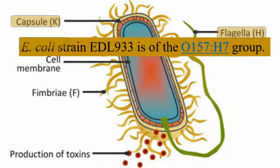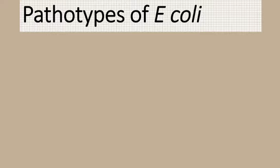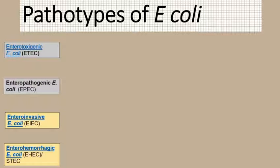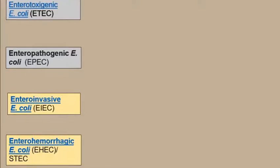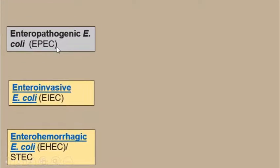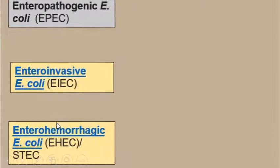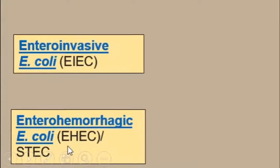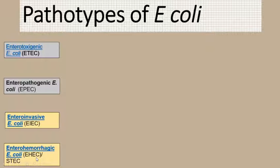Other than the antigens, E. coli can also be classified into different pathotypes depending upon the pathogenicity — how they are causing the lesions. There are nearly six types of pathotypes of E. coli. The major four are enterotoxigenic E. coli (ETEC), enteropathogenic E. coli (EPEC), enteroinvasive E. coli (EIEC), and enterohemorrhagic E. coli (EHEC). From the name itself, you can get an idea about how they differ from each other.